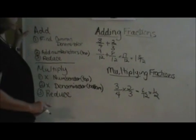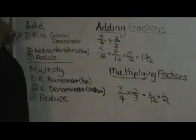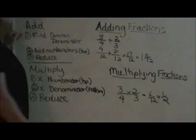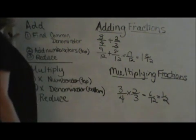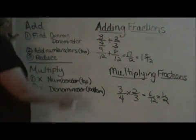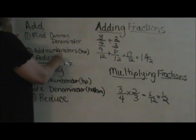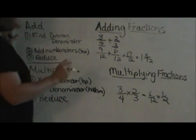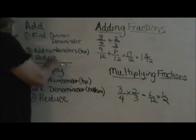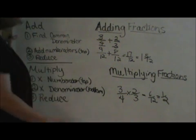Okay, for adding, what you want to do is you want to find a common denominator. In my problem, my denominators were three and four and my common denominator is twelve. Then you're going to add the numerators, which is the top of the fraction. You don't add the common denominator. You keep it the same and then you're just going to reduce your answer or simplify it.